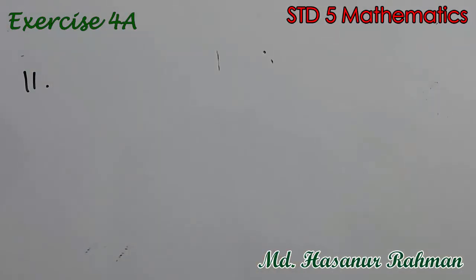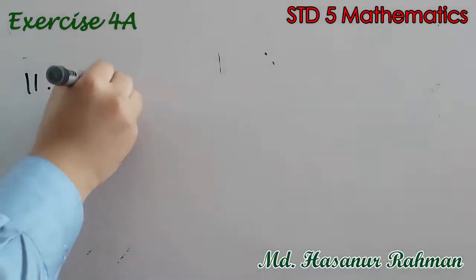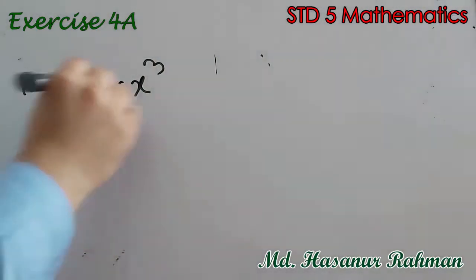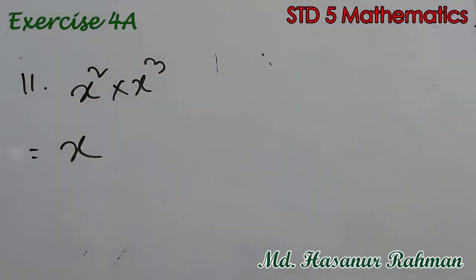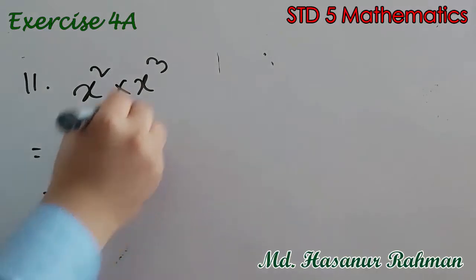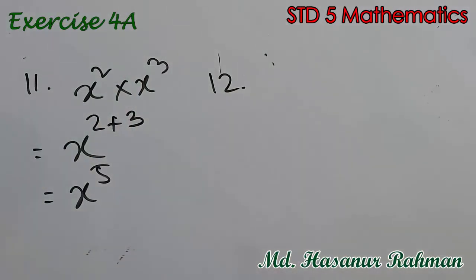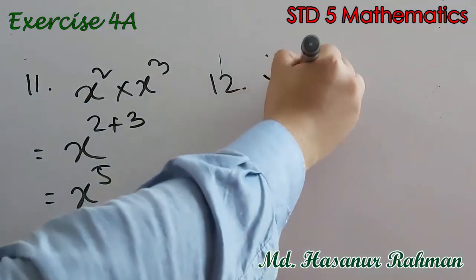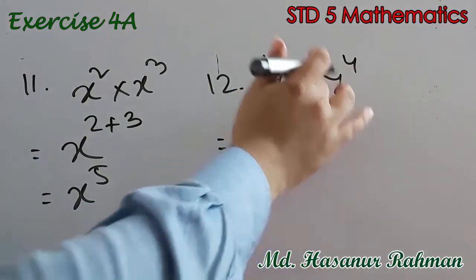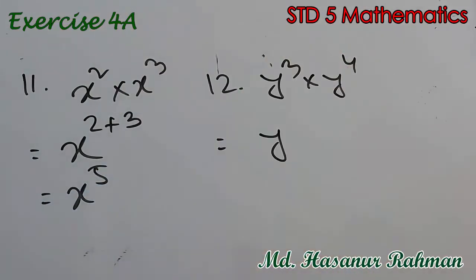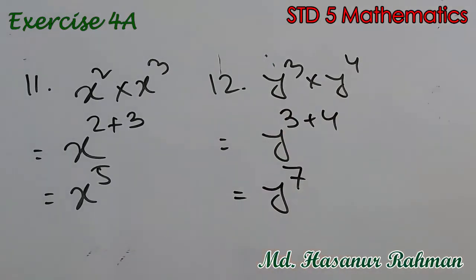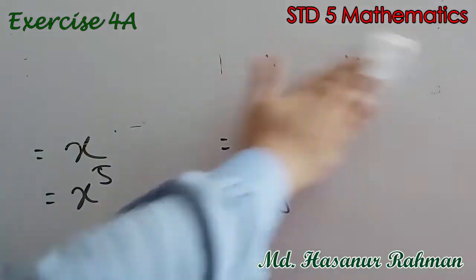Now number 11 says x squared into x cubed. Both bases are the same, so we can add the powers: x to the power 2 plus 3, that means x to the power 5. Number 12 says y cubed into y to the power 4. Same base with a multiplication sign means we add the powers: y to the power 3 plus 4, that is 7, so y to the power 7 is the answer.